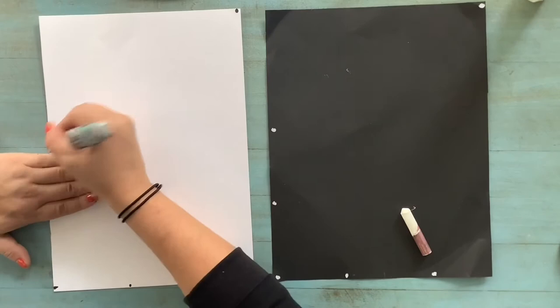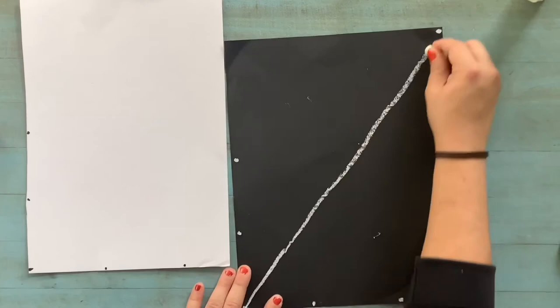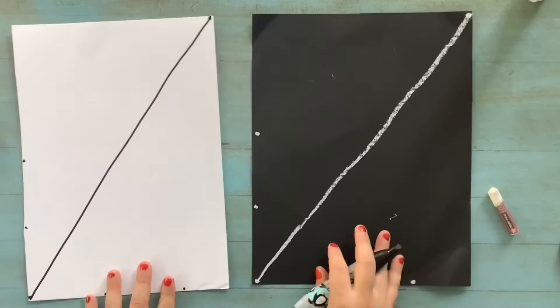Now I'm going to draw a diagonal line from one corner to the other. I like to draw it with my finger first so that I know exactly which way I'm going. I'm going to do the same thing on my white paper so you can see it twice. Remember, this line should be diagonal.